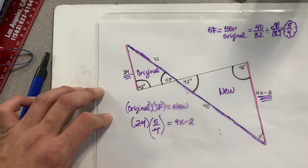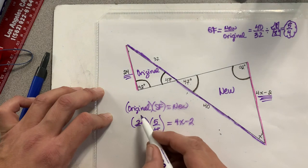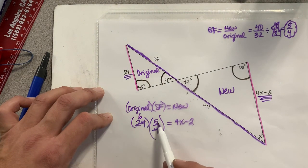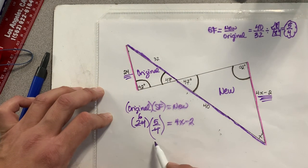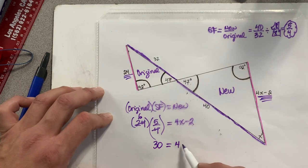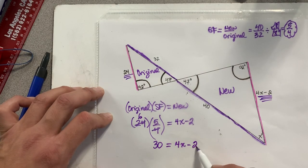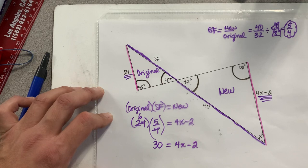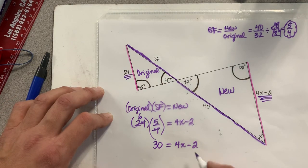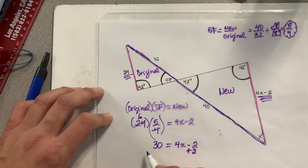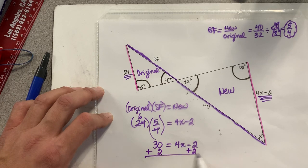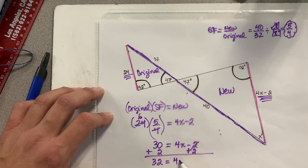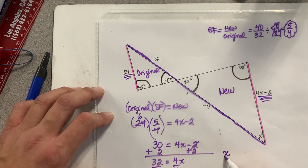24 divided by 4? Oh, let's try that again. 24 divided by 4? 6. 6 times 5? 30. 30 equals 4x minus 2. What am I going to do to both sides right now? Add 2. Add 2. 32 equals 4x. Divide each side by 4. And the value of x is? 8.